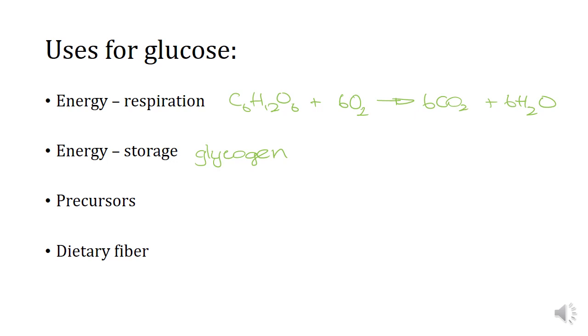Uses for glucose: energy storage, this is our glycogen. Glucose is also used as precursors. Things like ribose, so glucose and other sugars can be converted to ribose, which is necessary for DNA and RNA. There are other examples, but that's the one that's occurring to me right now. And I talked about dietary fiber, cellulose.